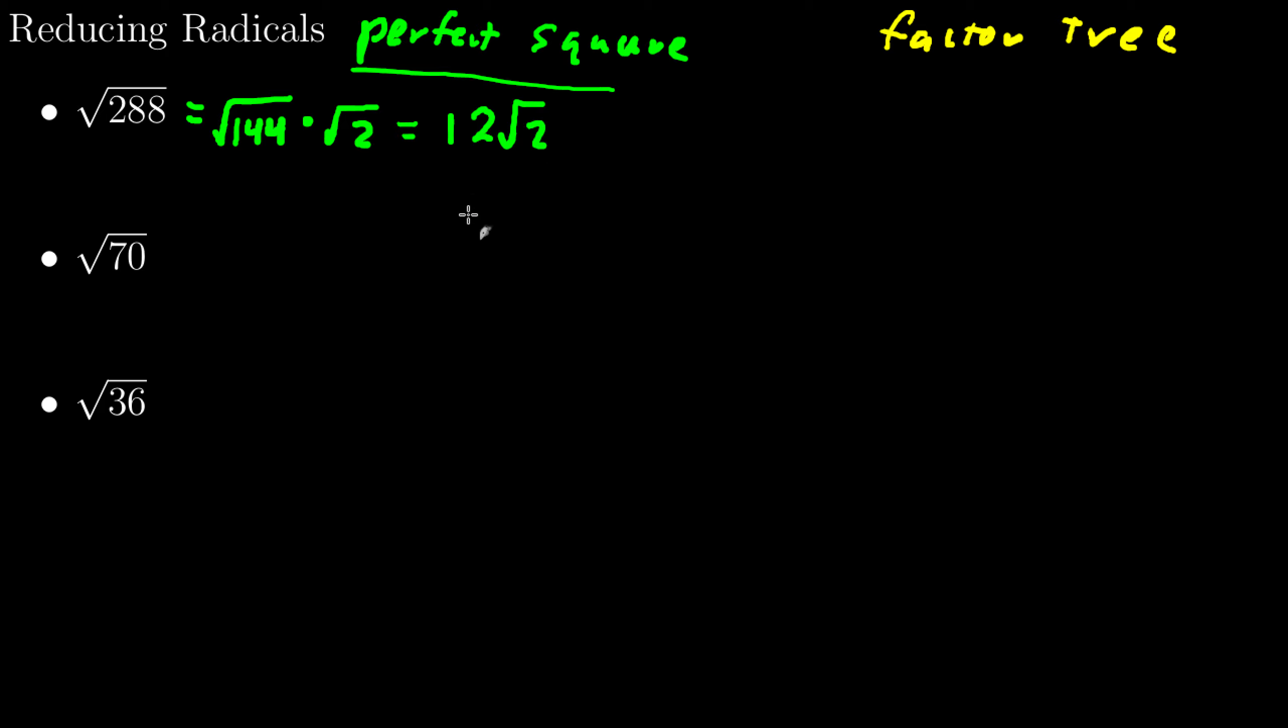Now that's nice but that involves me knowing that this is a perfect square, knowing this is the largest perfect square, and being able to see that it goes into 288. So that involves a lot of stuff. Most of my students, and this is the way I'll show the examples from here on out, will do what's called a factor tree.